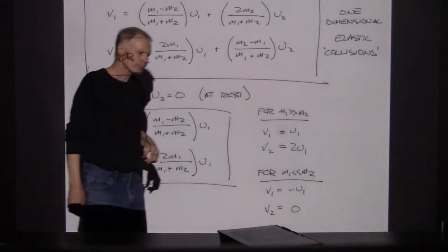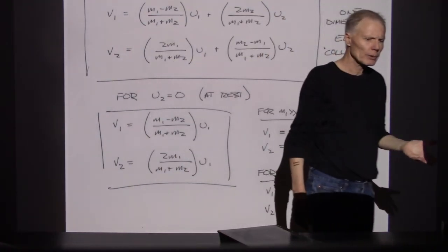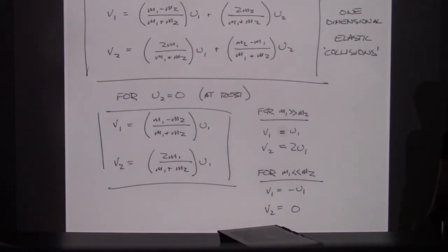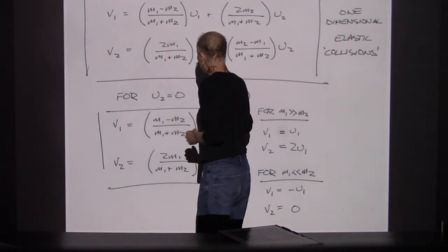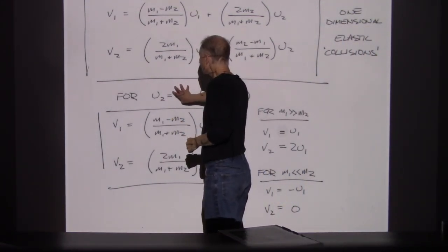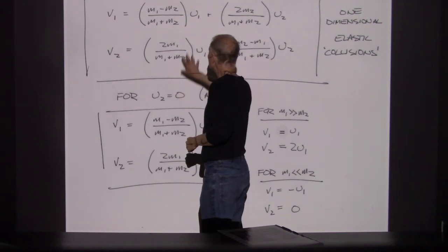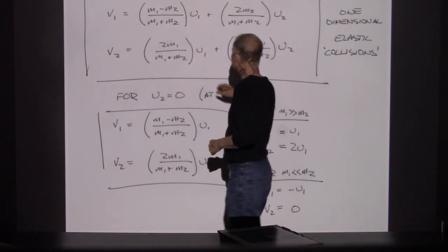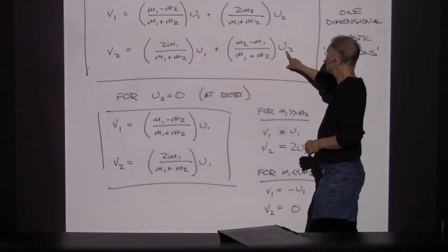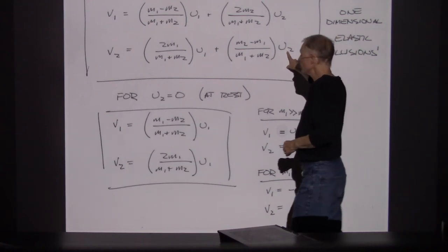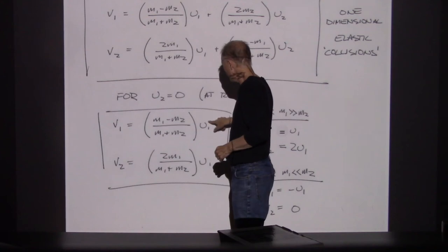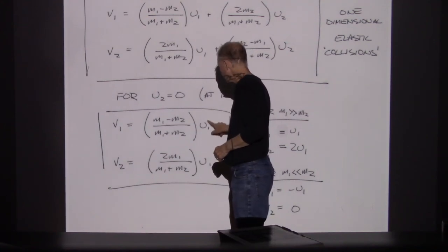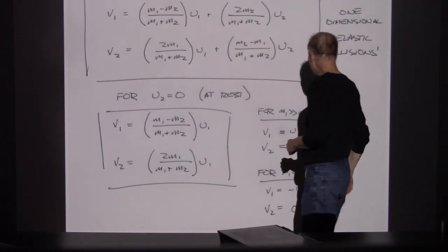There's a more specific solution that's handy in many homework problems: one of the objects is at rest. I can take these equations and set U2 equal to zero, so everything depends just on U1.